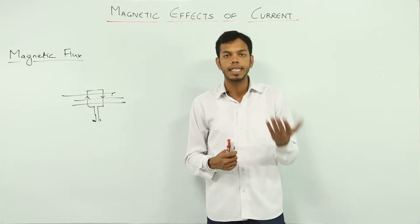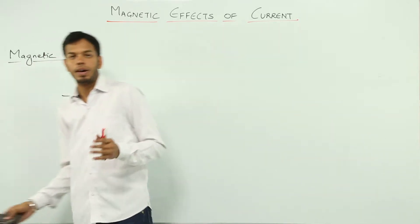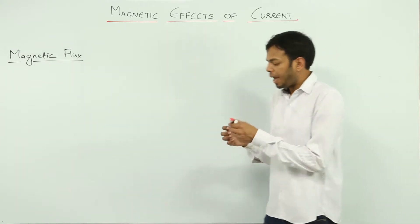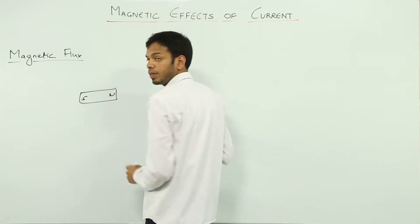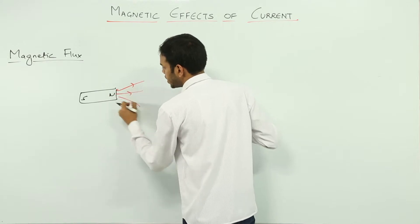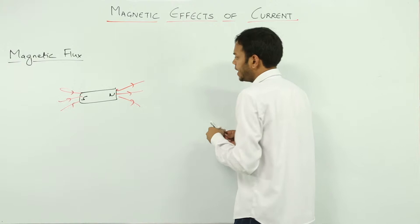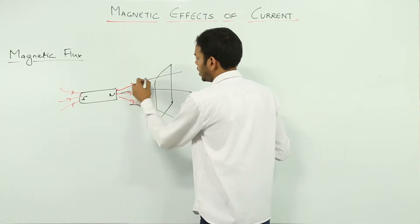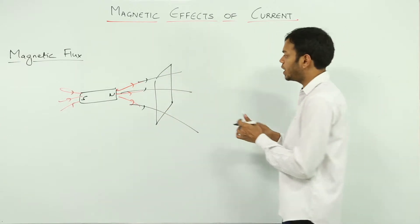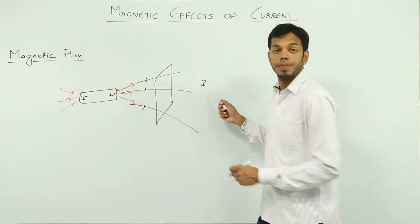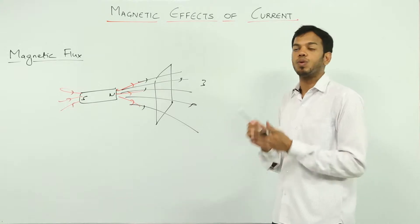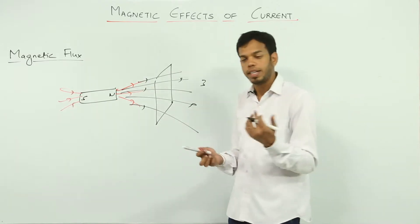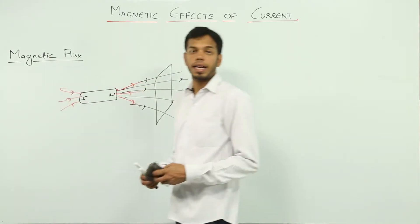A generator is a device which generates electricity. To understand the whole concept, we'll walk through magnetic flux and electromagnetic induction. Magnetic flux is simple — suppose this is a magnet with magnetic lines of force coming out of it. If three magnetic lines of force pass through a defined area, then the magnetic flux equals three. If five lines pass, the flux is five. Magnetic flux is the number of magnetic lines of force passing through a defined area.